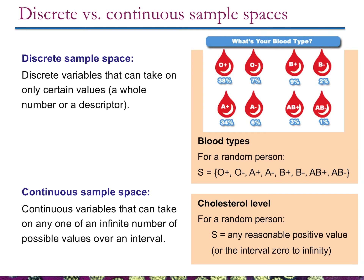A continuous sample space is where you have an infinite number of possible events. An example is cholesterol level — for a random person, the sample space is any reasonable positive value. The only thing limiting our ability to distinguish between two people's cholesterol levels is how many decimal places we can take the measurement. You could theoretically take it to an infinite number of places, so you would never have two people with exactly the same cholesterol level. The interval from zero to infinity defines that sample space.